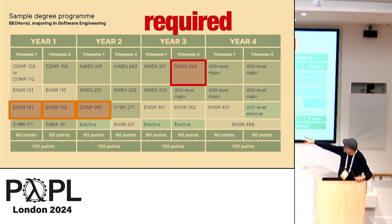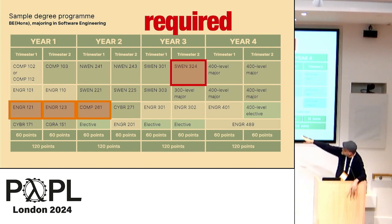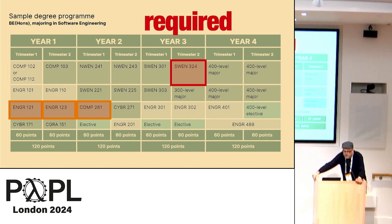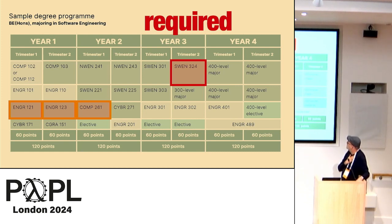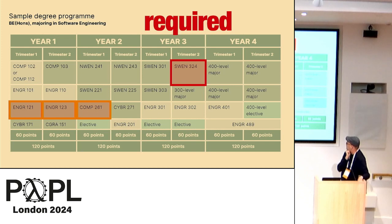The stuff people had seen there is effectively some first-year courses common across the engineering program with a bit of basic logic. Then in second year there's 261, which is algorithms, and the rest of it is effectively programming.